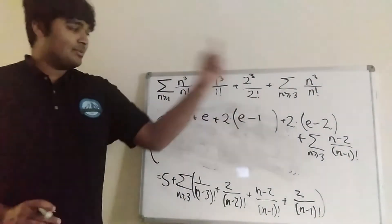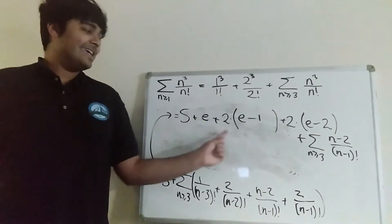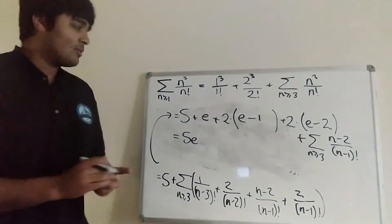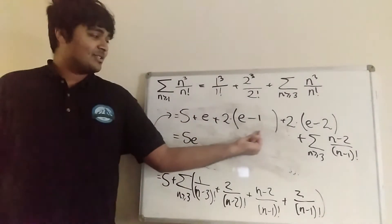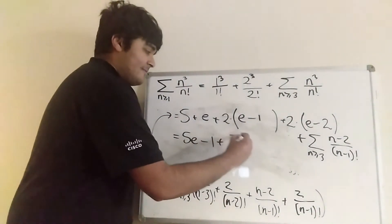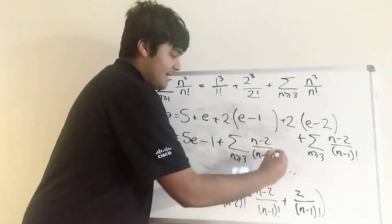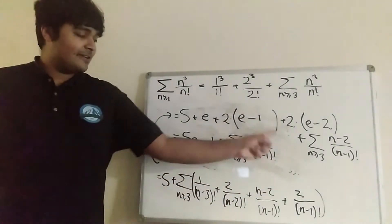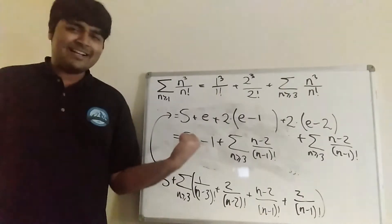So this infinite sum is equal to this expression, and we can do some nice cancellations. We've got an e here, a 2e here, and a 2e here, so that's 5e. And the constants: we've got 5 minus 2 minus 4, which is 5 minus 6, giving minus 1. So we have 5e minus 1 plus the remaining infinite series, the sum from n bigger than or equal to 3 of n minus 2 all over n minus 1 factorial. The last thing we want to do is evaluate this infinite series and add it on.